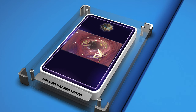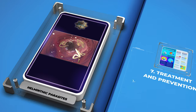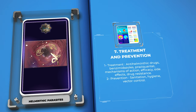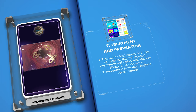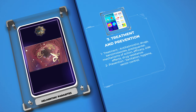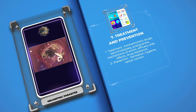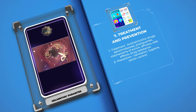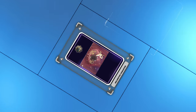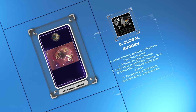Effective treatment of helminthic infections is crucial for alleviating symptoms, preventing complications, and interrupting transmission. Anti-helminthic drugs such as benzimidazoles and praziquantel are used, with their mechanisms of action, efficacy, side effects, and the emerging issue of drug resistance explained. Additionally, preventive measures such as sanitation, hygiene, and vector control are emphasized to combat these infections.